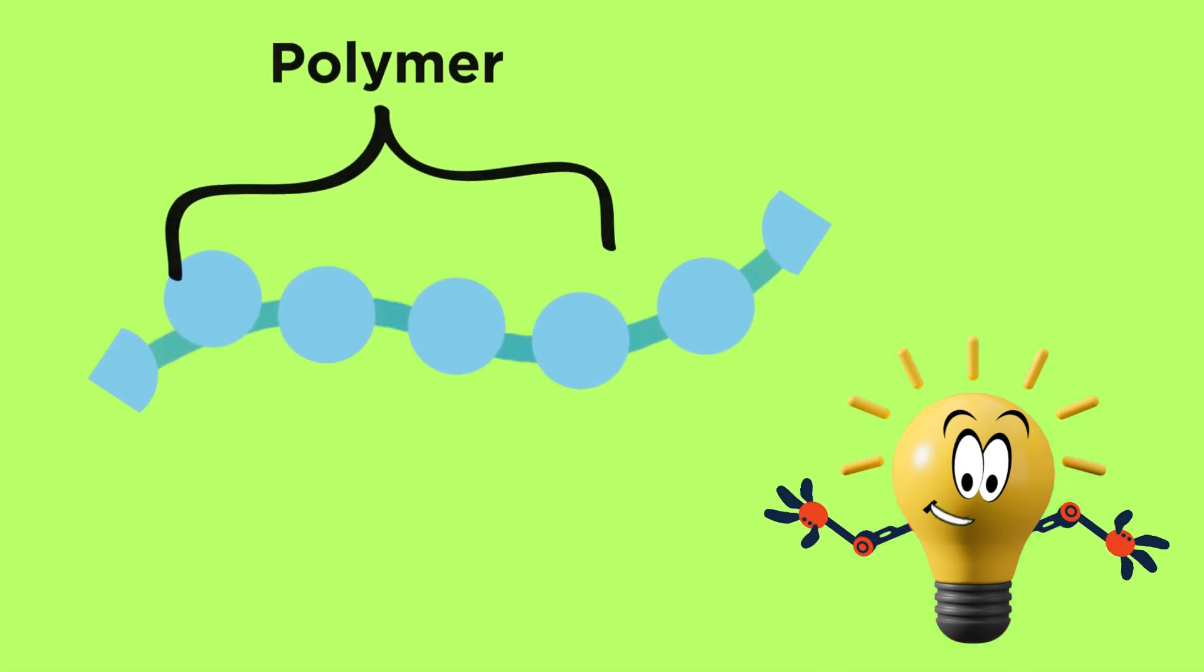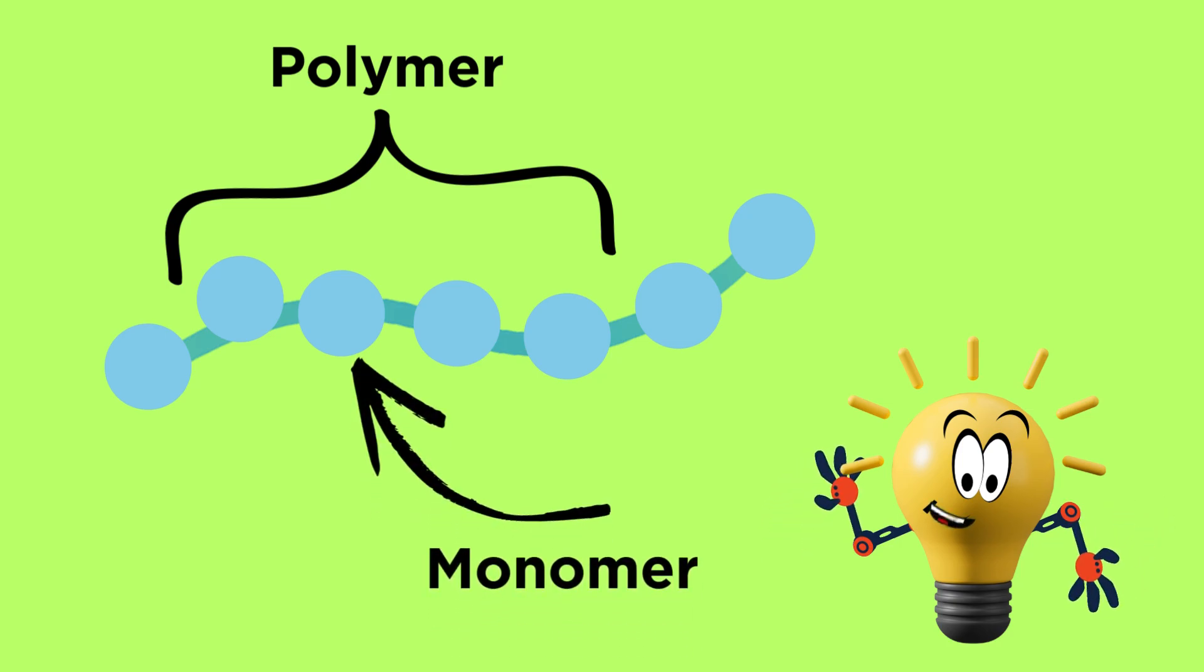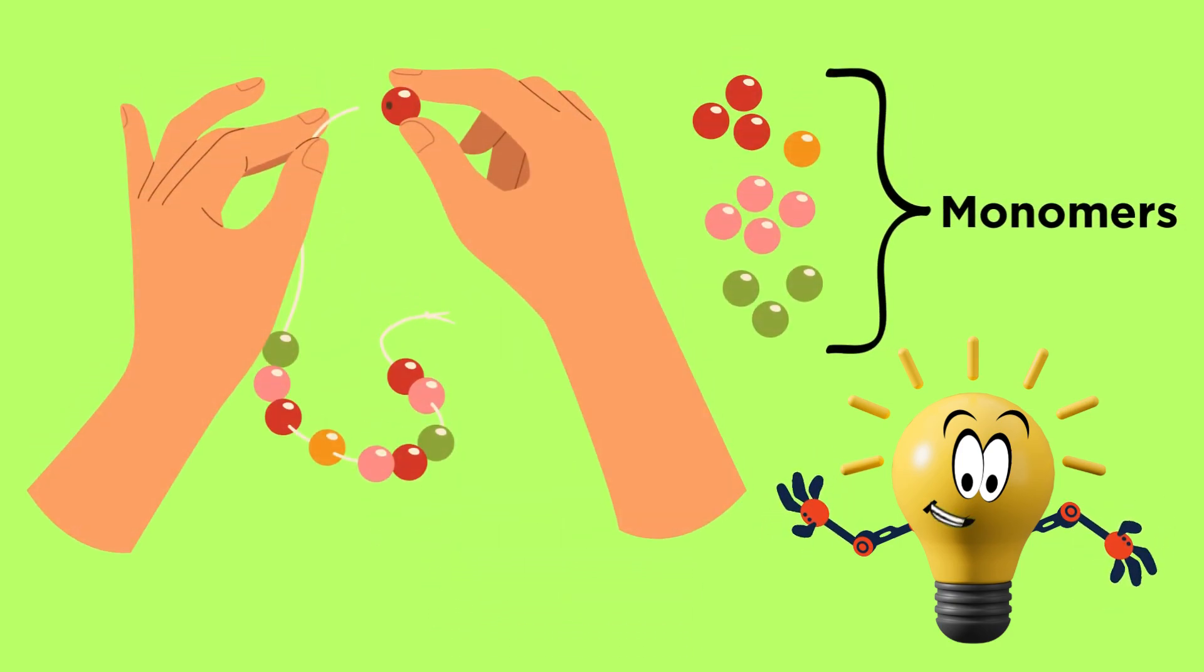Polymers are like super long chains made up of tiny building blocks called monomers. Imagine a long necklace made of beads where each bead is a monomer, and the whole necklace is a polymer.